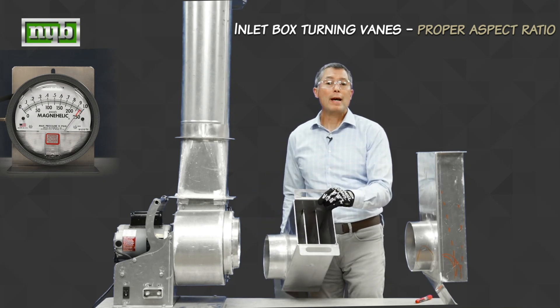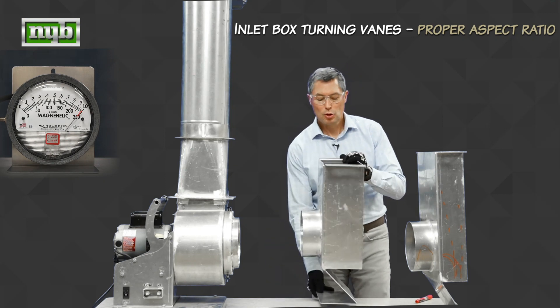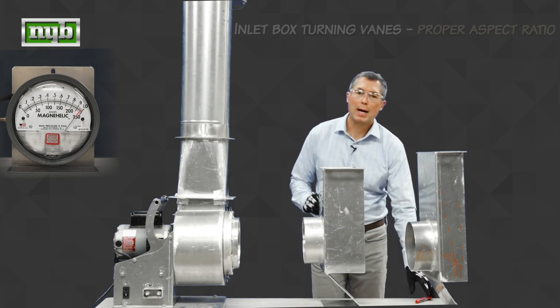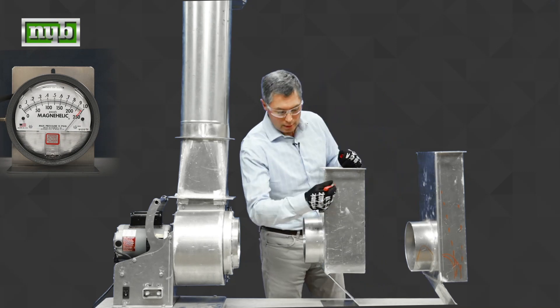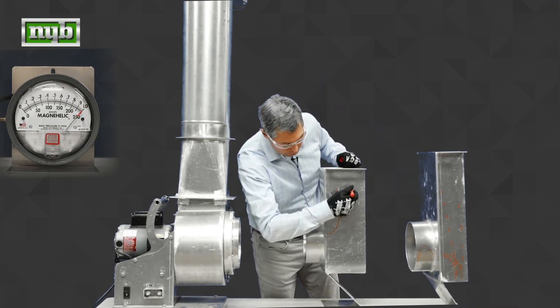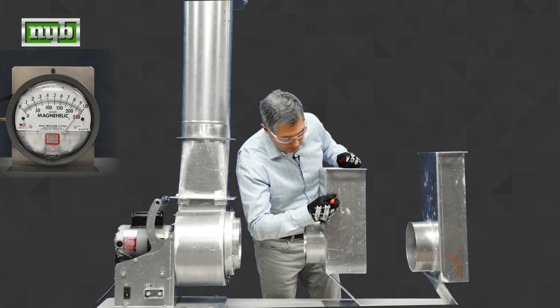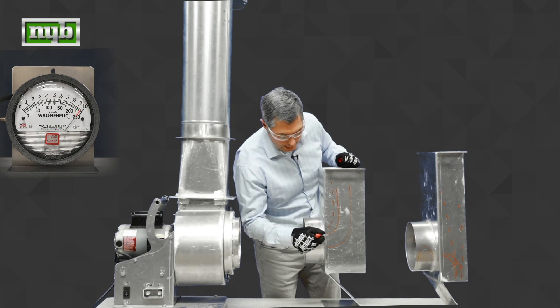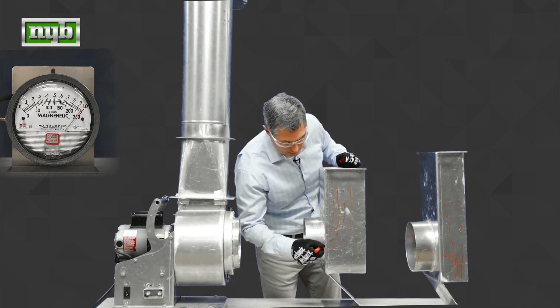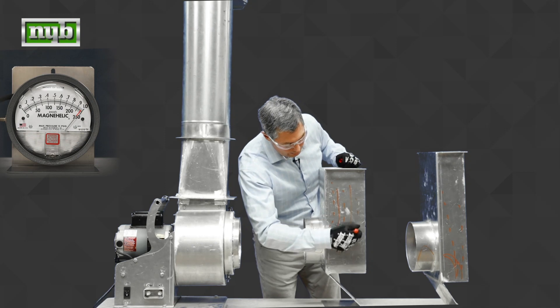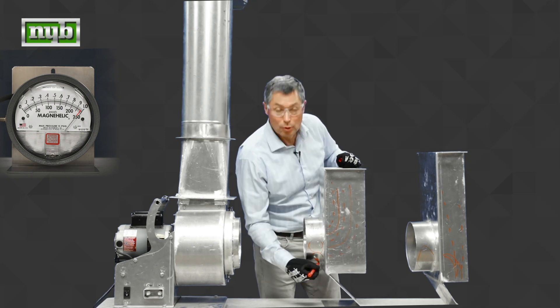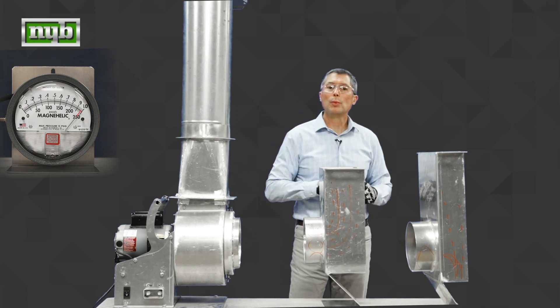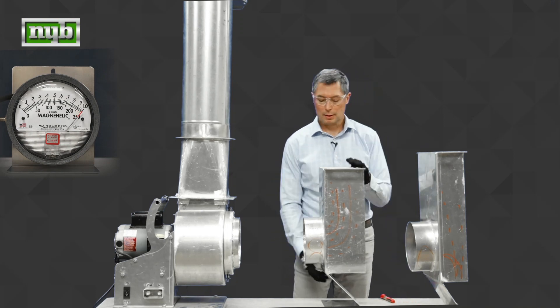Secondly, we've added turning vanes to this inlet box. And those turning vanes actually break the box into three sections. That allows the air to come in, load the top, air to come into the middle, load the middle, air to come into the bottom, load the bottom section of the wheel. Let's see what happens when we use this box opposed to this box.